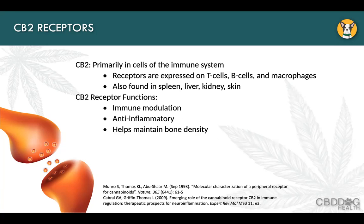CB2 receptors are primarily in the cells of the immune system — expressed on T cells, B cells, and macrophages, which are the general cleanup guys. They're also found in organs associated with the immune system: the spleen, liver, kidney, and skin. We don't think of the skin as having an immune system, but indeed there is a terrific amount going on there — otherwise bacteria, mange mites, and other invaders could penetrate the skin without a really active immune system at the skin level.